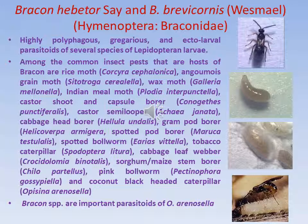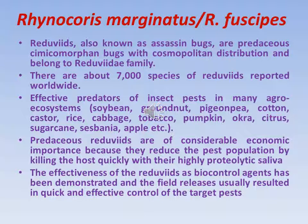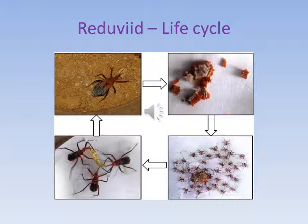Reduvid predators Rhynocoris marginatus and Rhynocoris fuscipes are very important predators that insert their mouthparts into larvae and suck their juices. The Reduvid life cycle includes an egg stage, different nymphal stages, and finally an adult. All nymphal stages and the adult stage suck the fluid contents of larvae and kill them.